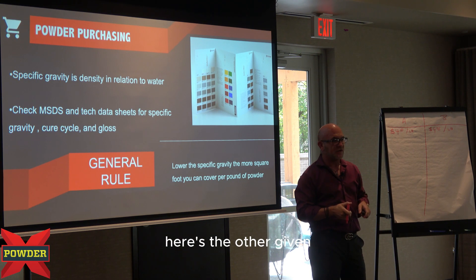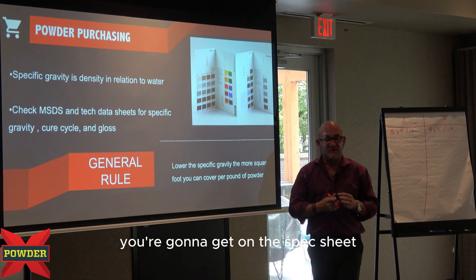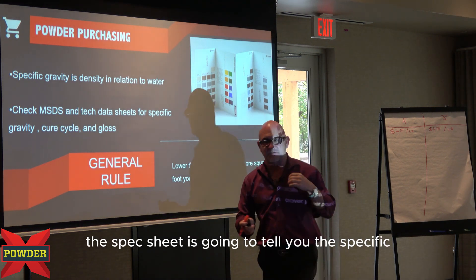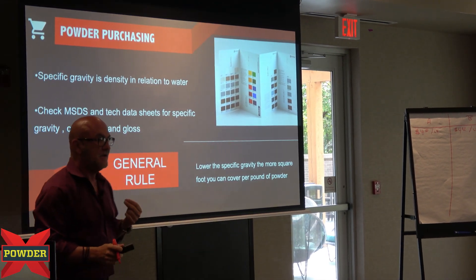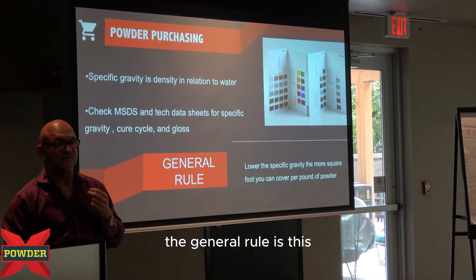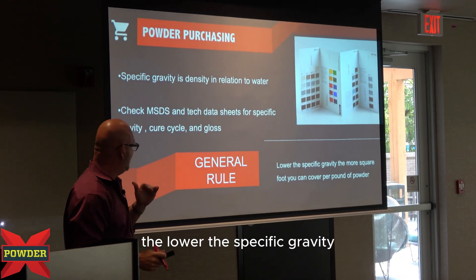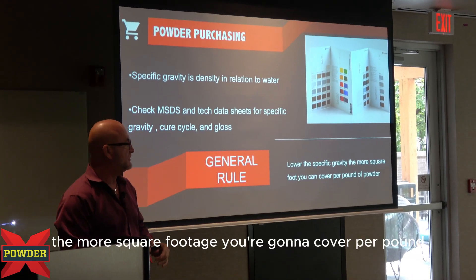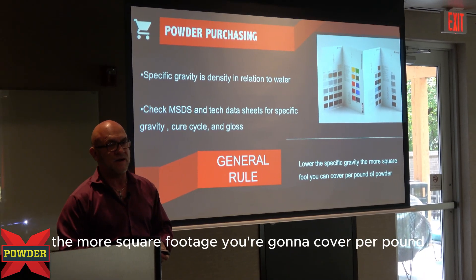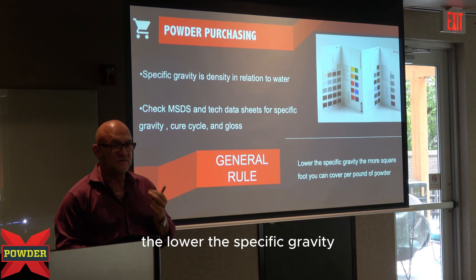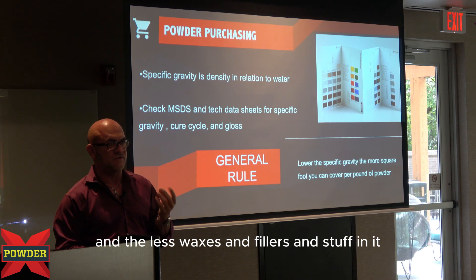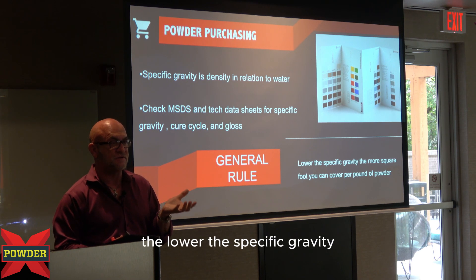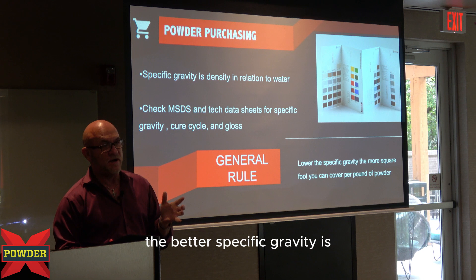Here's the other given you're going to get on the spec sheet. The spec sheet is going to tell you the specific gravity of the powder. The general rule is this: the lower the specific gravity, the more square footage you're going to cover per pound. The lower the specific gravity, the more pigments and the good stuff that's in it, and the less waxes and fillers. So the lower the specific gravity, the better.